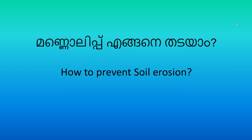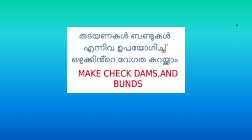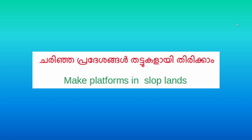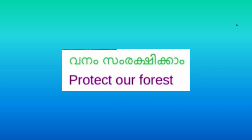How to prevent soil erosion? Planting trees helps prevent soil erosion. Also, making check dams and bunds, making bio-fences, creating platforms on slopes, preserving biodiversity, and protecting our forests.